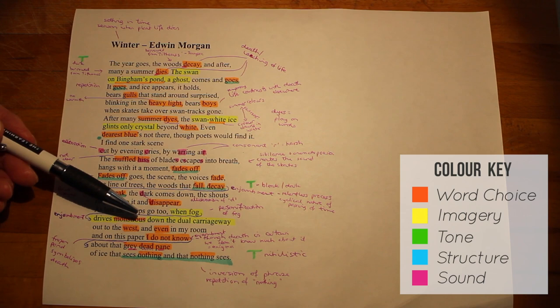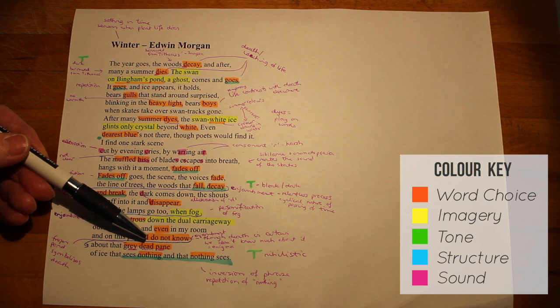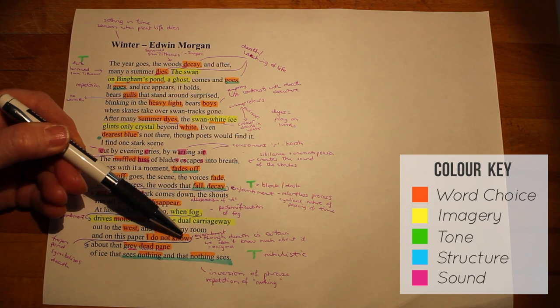The poet then leaves the pond and returns home. And he says that even in his room, once he's back home in the safe confines of his own house, he's still perplexed by what he's seen. He says, I do not know about that grey, dead pane of ice. Death is an enigma. We know that it definitely happens. That is certain. But he and the rest of us cannot be sure exactly what happens after death.